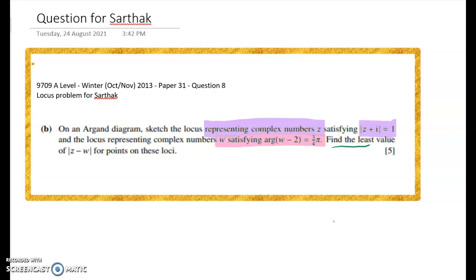Then we have to find the least value of |z - w| distance modulus for points on these loci. In other words we're going to find two things, two lines, and then we have to figure out the minimum distance between those two lines.